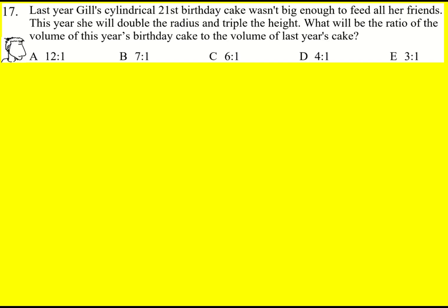To work out the ratio of the volume of this year's birthday cake to last year's, let's work out the volumes in terms of the radius and the height. So last year's cake, I'm going to say the radius was r and the height was h, then the volume becomes the cross-sectional area, so pi r squared, multiplied by the height.